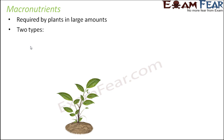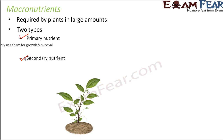Macronutrients are again of two types: primary nutrients and secondary nutrients. Primary nutrients are those which are primarily used by a plant for their growth and survival — the first nutrients the plant needs. Examples of primary nutrients are nitrogen, phosphorus, and potassium.